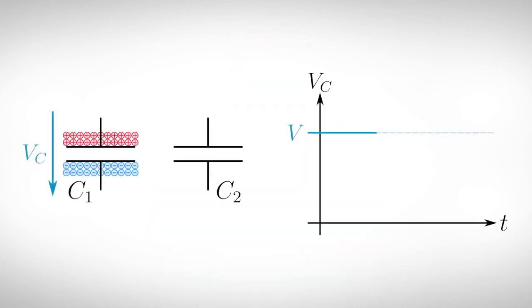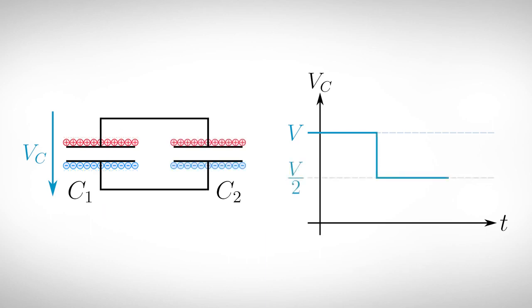The first storage element we want to take a closer look at is the capacitor. Let's assume we have a loaded and an empty capacitor. Both have the same capacitance C. If we connect the loaded capacitor C1 with the unloaded one C2, charges will flow from C1 to C2 until an equilibrium is reached. Since each capacitor now carries half of the charge, the original voltage at C1 is halved.